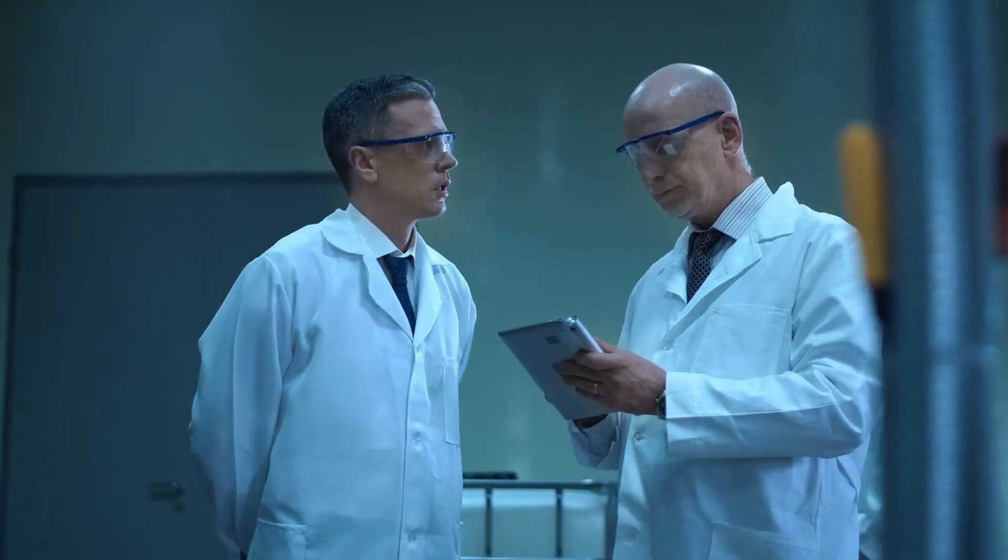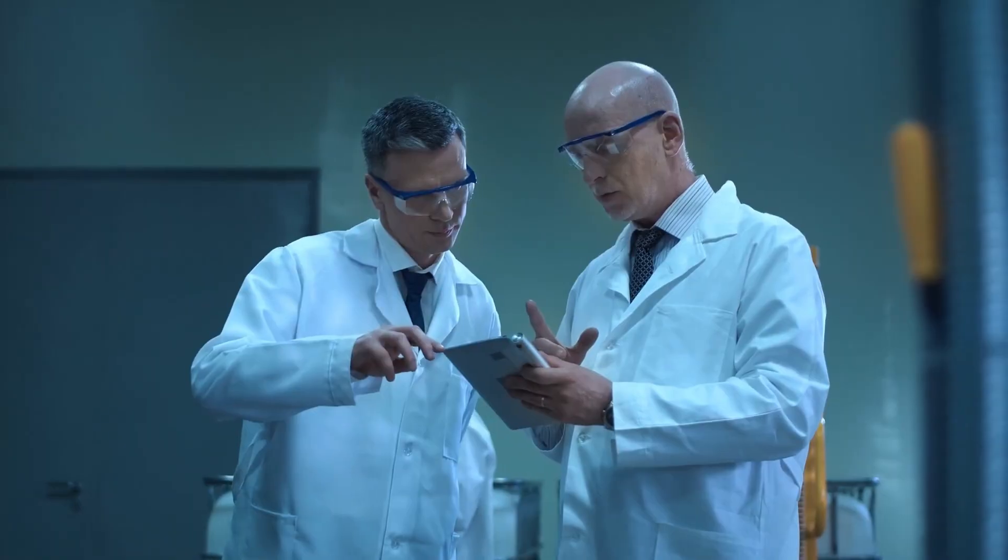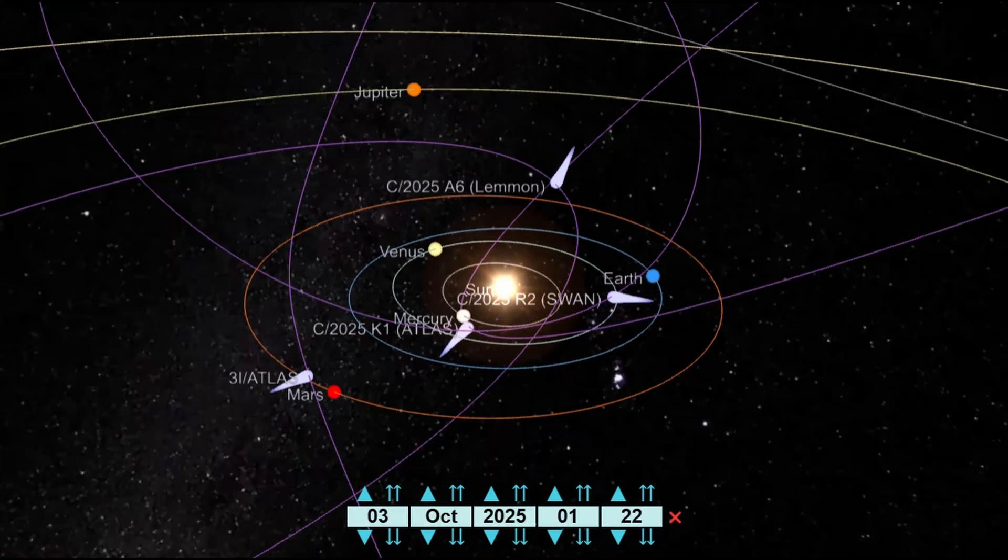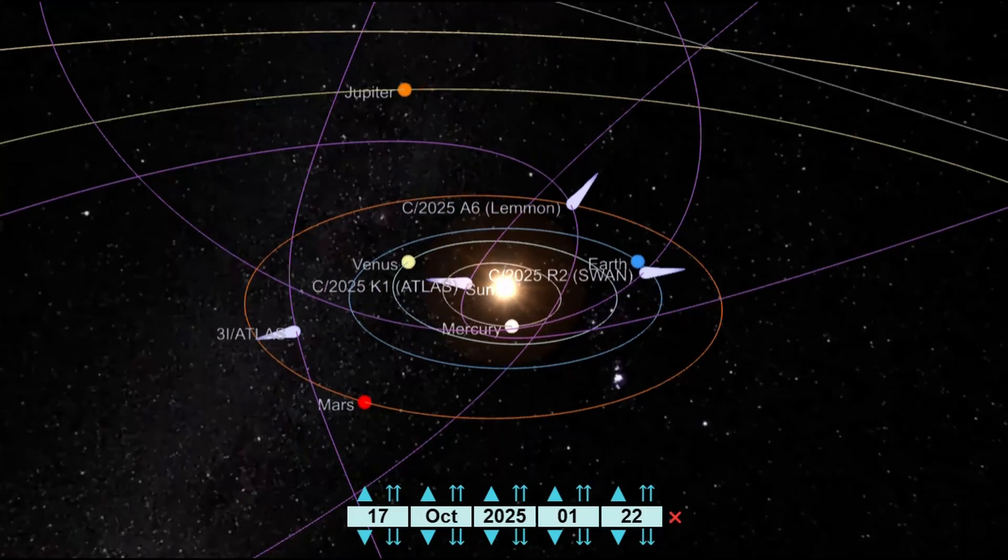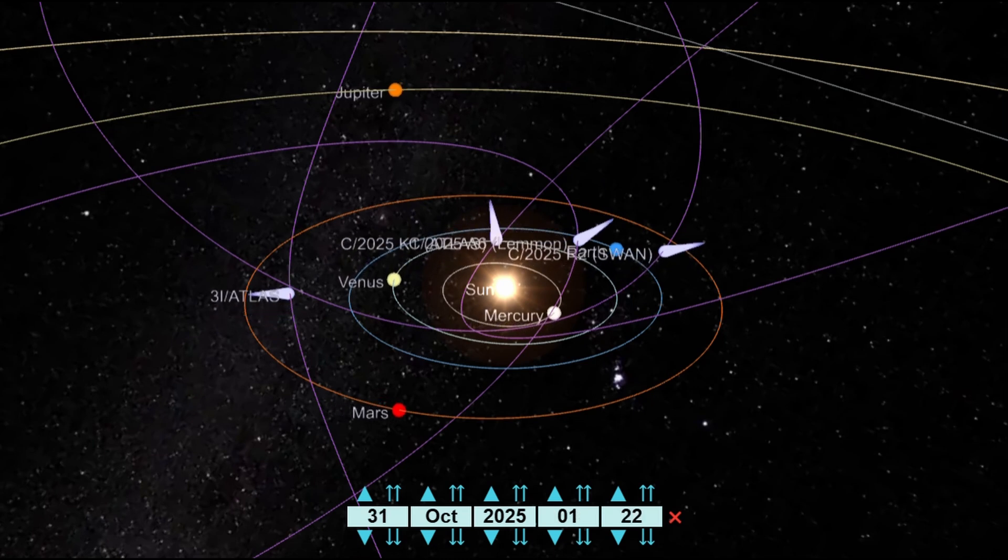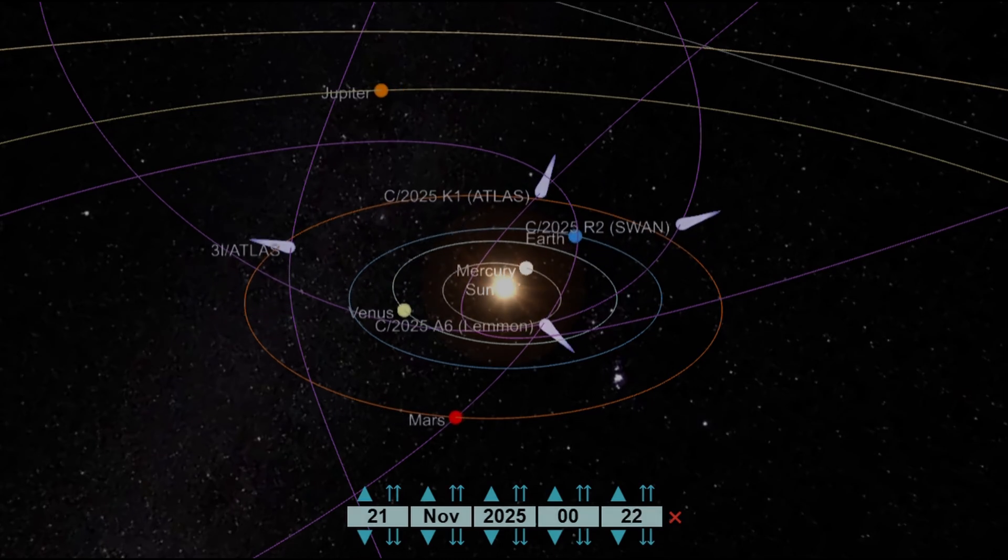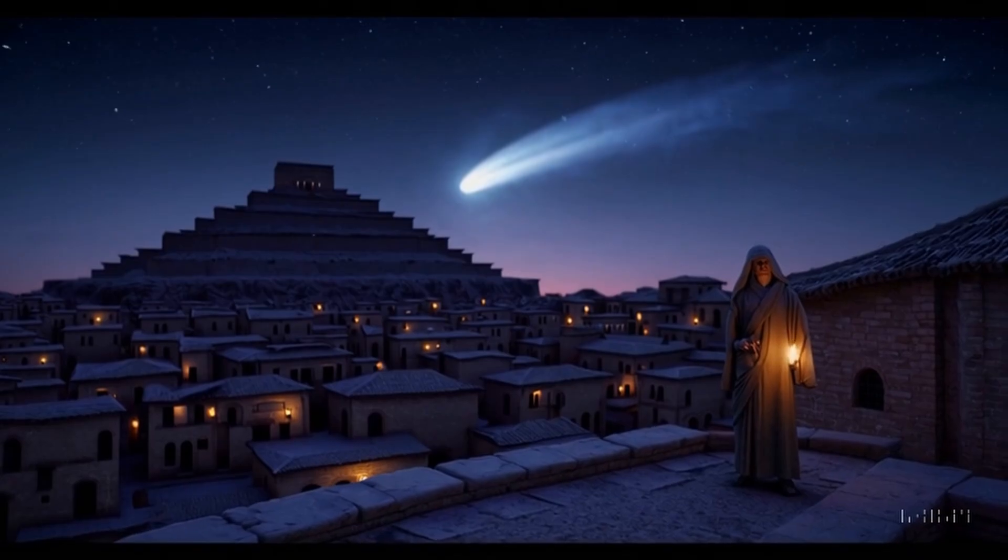We have abandoned the superstitions of the past, but the question remains. Is the Great Comet Swarm a cosmic accident, a random convergence of orbits? Or is it a mirror of our own chaos? Is it a harbinger of change, just as our ancestors believed?